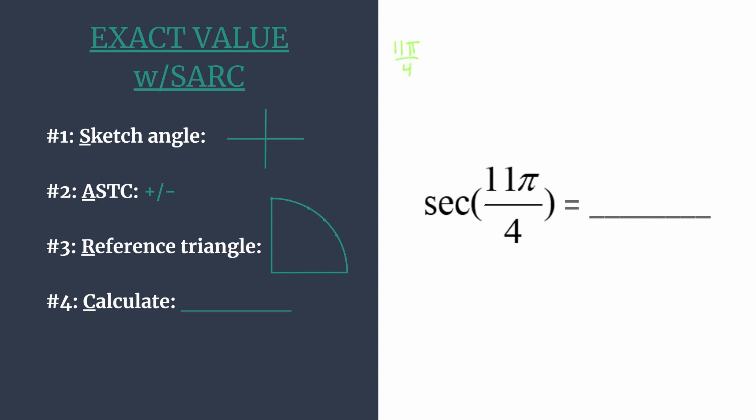We have 11π over 4, and we want to subtract 2π, but let's write it as 8π over 4 so we have that common denominator. So then we find that 3π over 4 is coterminal to 11π over 4.